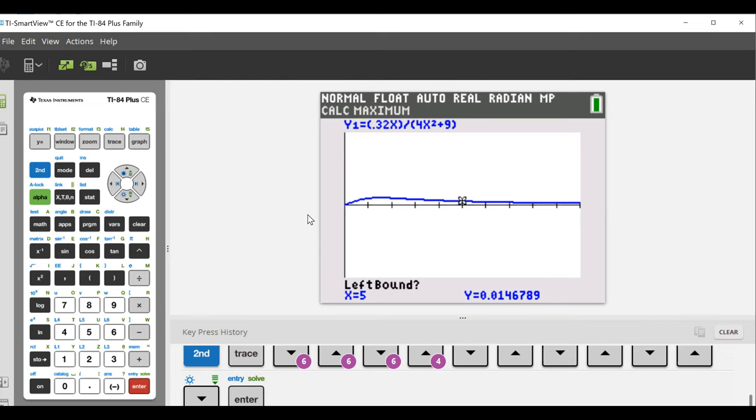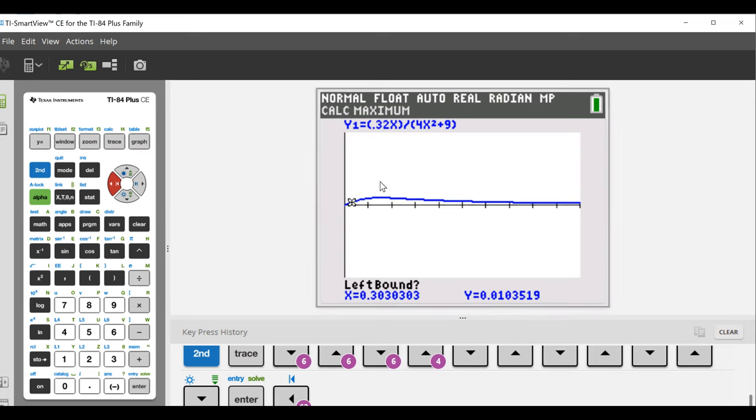A curve could have multiple extrema. So what your calculator is asking for is some indication of where the extrema you're looking for is. It's asking for a value to the left of the maximum you're looking for. And we scroll around with these arrow keys. We slowly scroll around. We get the cursor so that it's to the left of this maximum. We press enter.